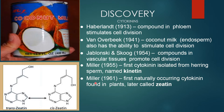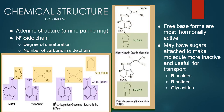Miller in 1961, first naturally occurring cytokines found in plants, later called zeatin. Chemical structure of cytokines: it consists of an aminopurine ring or adenosine structure and a N6 side chain.